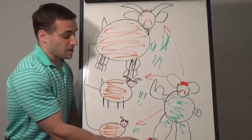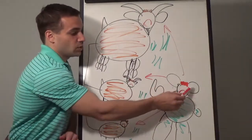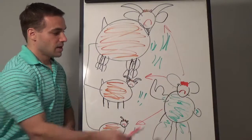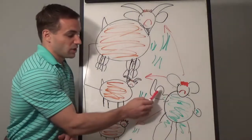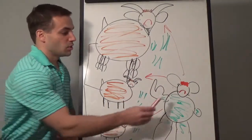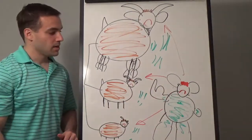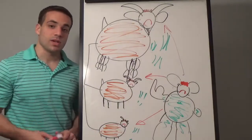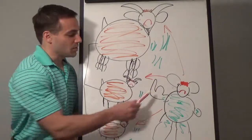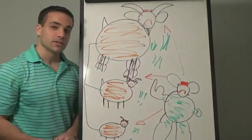He has two legs. He has two big ears. The troll is strong. The troll is sad. He wants to eat. He wants to eat the three goats.